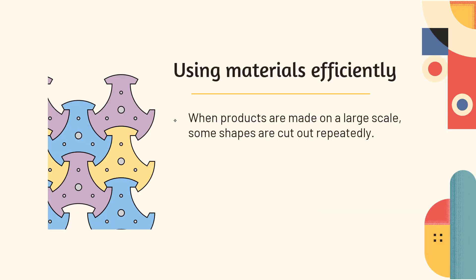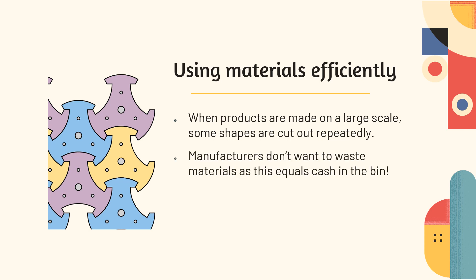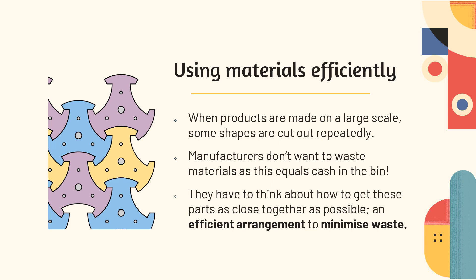You might be thinking: how does this relate to using materials efficiently? Well, when products are made on a large scale, some shapes have to be cut out repeatedly — perhaps like this machine part on the left-hand side, where you want thousands of the same thing. Manufacturers don't want to waste materials as this equals cash in the bin. Any space left over would have to be repurposed — perhaps melted down — but it's not actively used. Therefore, manufacturers have to think about how to get parts as close together as possible: an efficient arrangement to minimise waste.